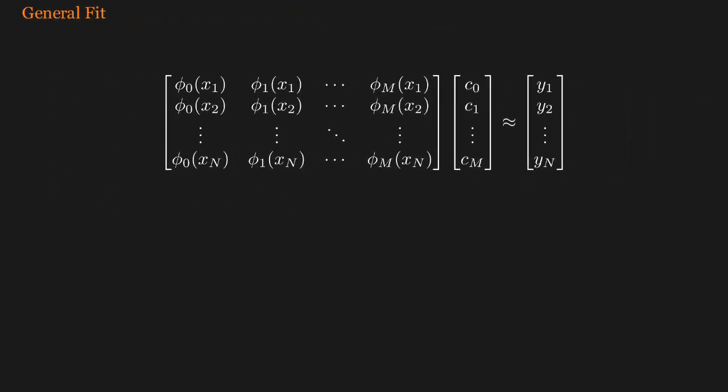There are n rows because there are n points in the data set, and there are m plus 1 columns because the coefficient index starts at 0. For example, a line is of order 1, so it has 1 plus 1 is 2 parameters to be solved.